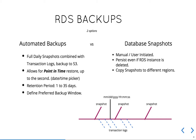Let's start with RDS backups. We get two options: the automated backup option and the manual database snapshot option. Each backup option is a little bit different. The automated backup is a full daily snapshot combined with transactional logs that are backed up to S3 file storage.